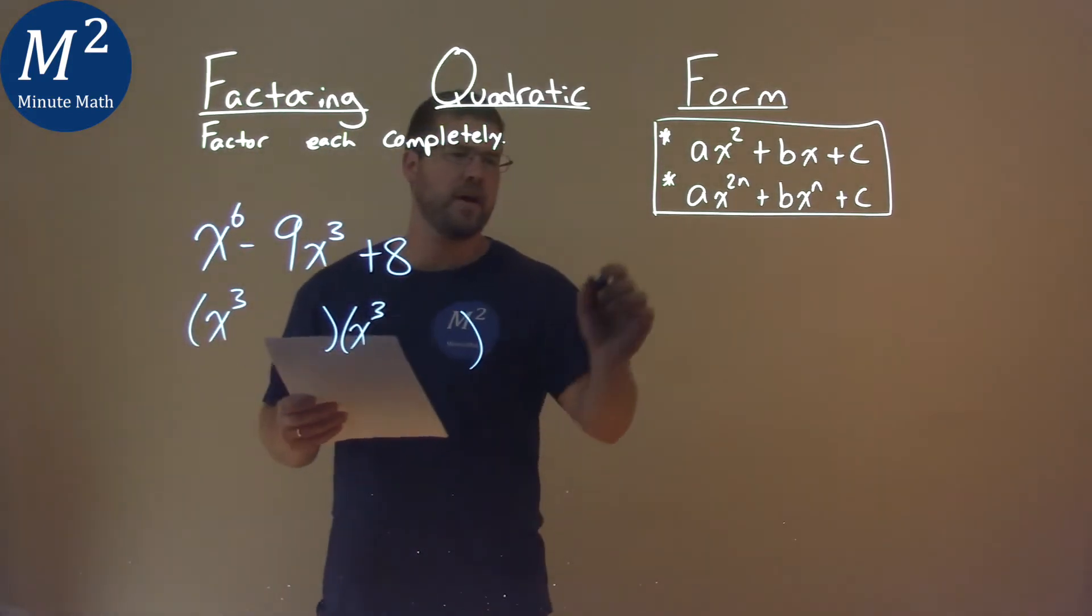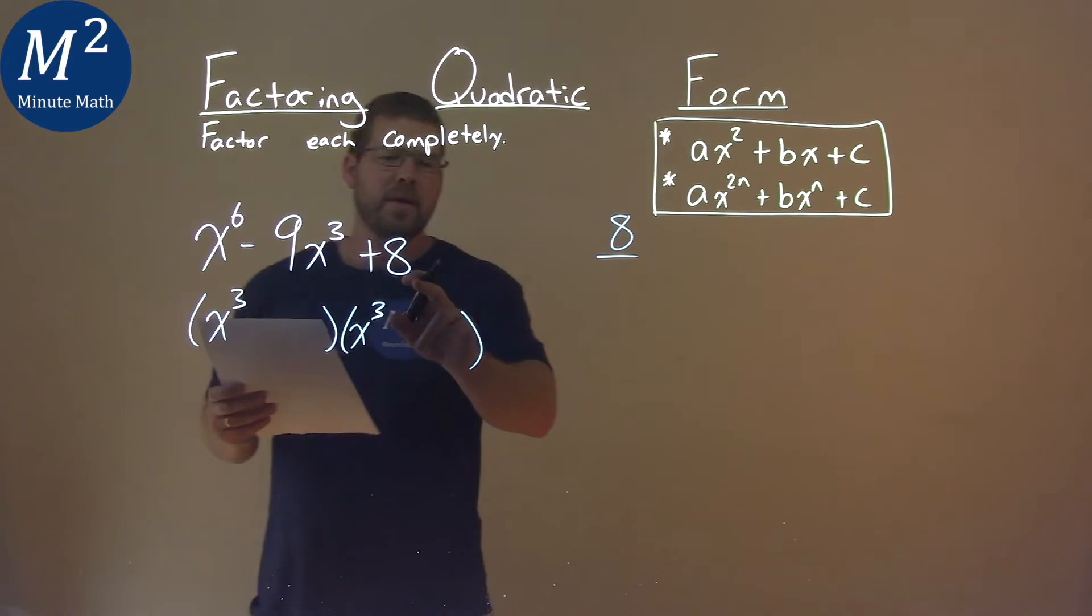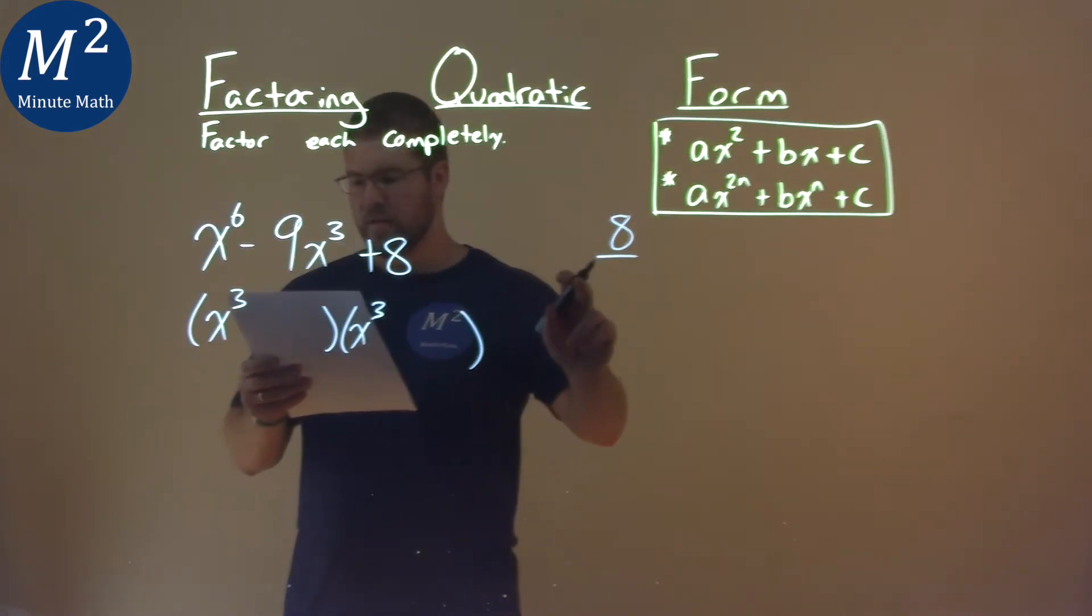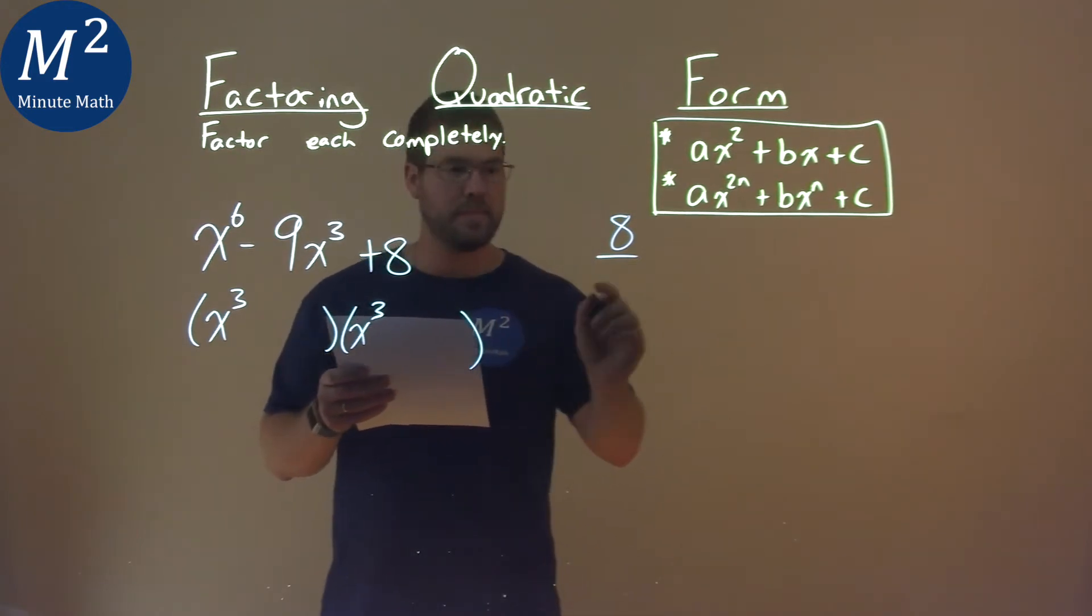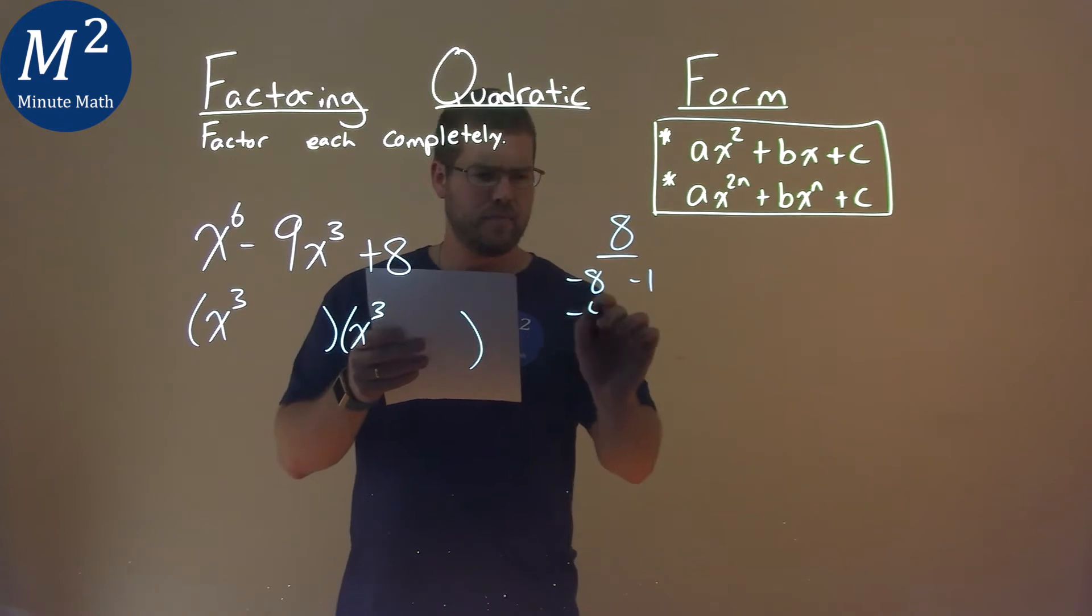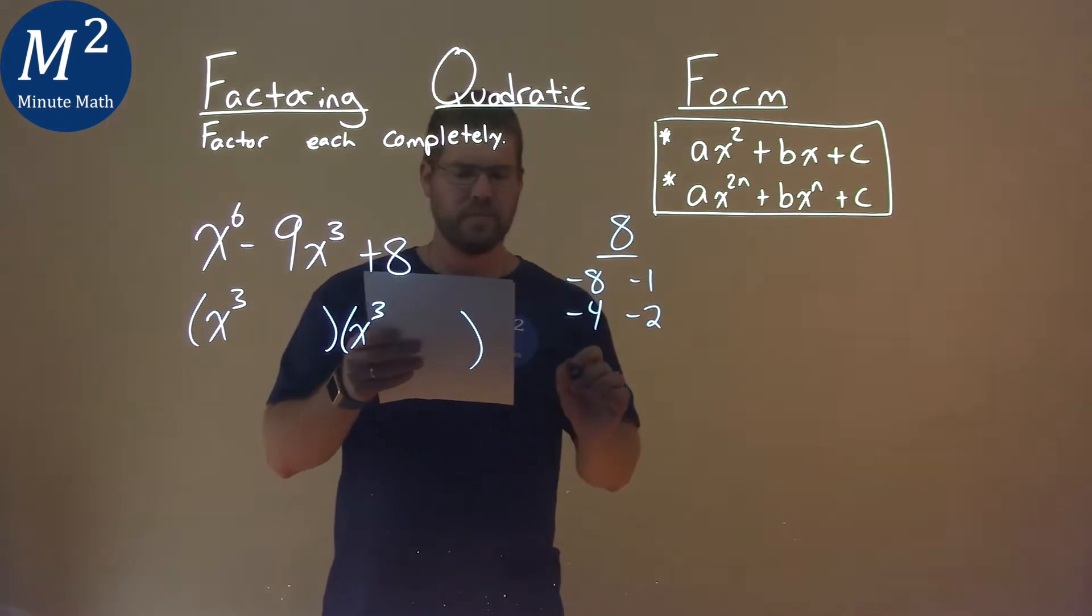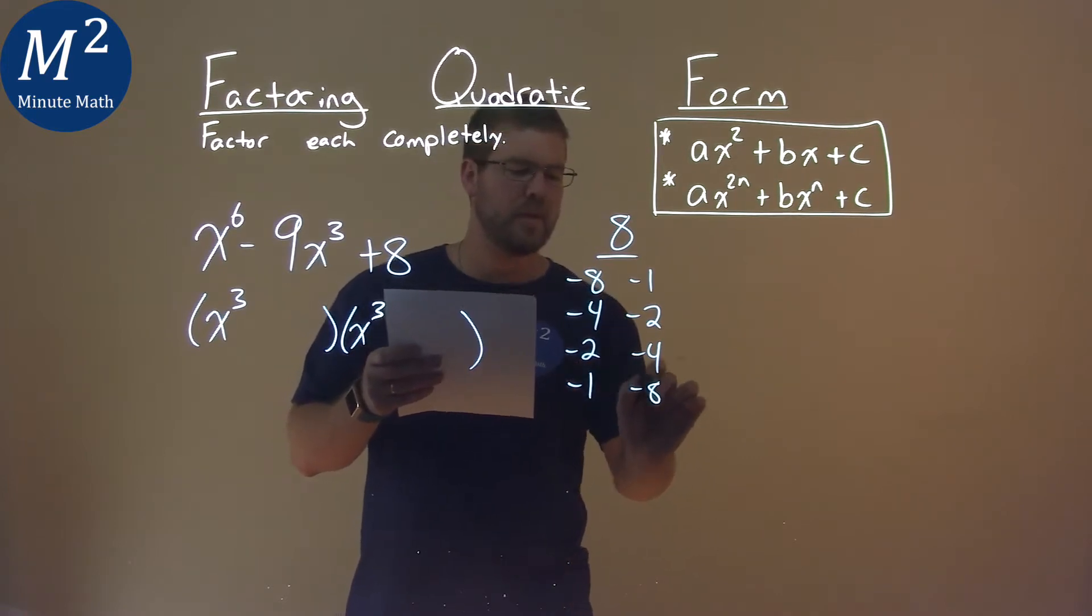So we look at our c value which is 8, and our b value being 9. When c is positive and b is negative, we know both values here will have to be negative. So what two numbers, negative numbers, multiply to be 8? Well, that's a negative 8 and negative 1, negative 4, negative 2, flip the orders around, negative 2, negative 4, and negative 1, negative 8.